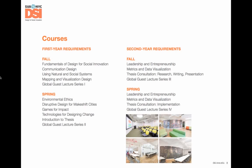Everyone takes the same classes over two years with your small cohort. In the fall of your first year, you'll take an introduction to social innovation, a fundamentals course for soft skills, a communication design class working with real-world clients, and an introduction to mapping and visualization design. In the spring, you dive deeper into topics such as environmental ethics, informal economies, and game design. In your second year, you take two year-long classes: one in metrics and data visualization emphasizing how to measure and visualize impact.